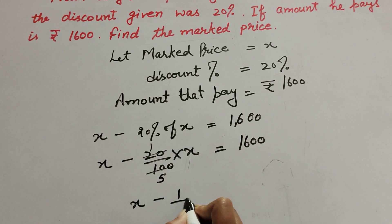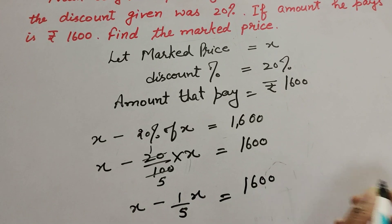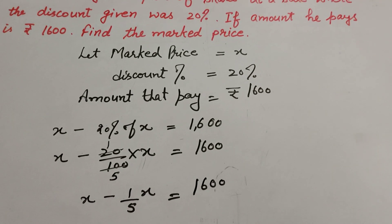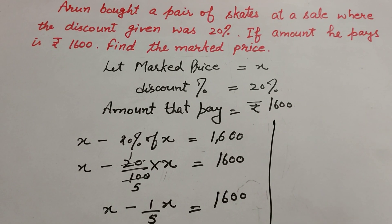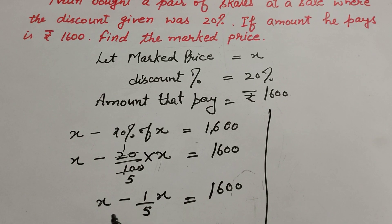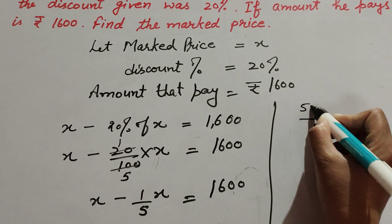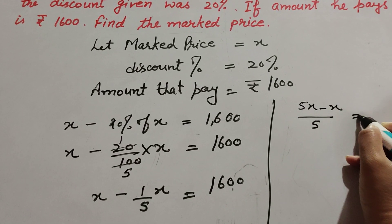x minus (1/5)x equals 1600. Now we take the LCM of 1 and 5, which is equal to 5. So (5x - x)/5 equals 1600.